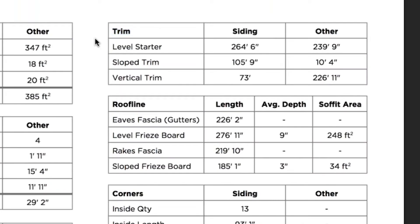The top right-hand corner is your trim table. Here we're going to provide you all of the trim linear footage dimensions for level starter, slope trim — which is typically roof step flashing points — and vertical trim, which is a transition between a siding component and another component. Under the roof line table, you'll find the eaves, which are typically your gutter lengths. You'll then have the level frieze board, which in this case is 276 feet 11 inches — this is where the top of the wall meets the soffit area. The average depth for the level soffit is 9 inches in this example. Please keep in mind that is the average depth and not the actual depth on the entire structure. Later in the report there will be a soffit report breaking out linear footage by depth. This is the average of all soffits on the level planes, including front porch openings and potentially a rear enclosed porch ceiling, so please consider that when reading the average depth number.